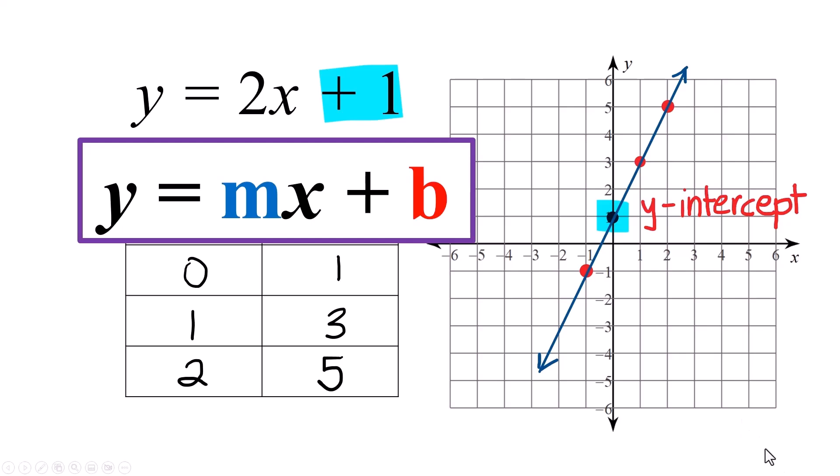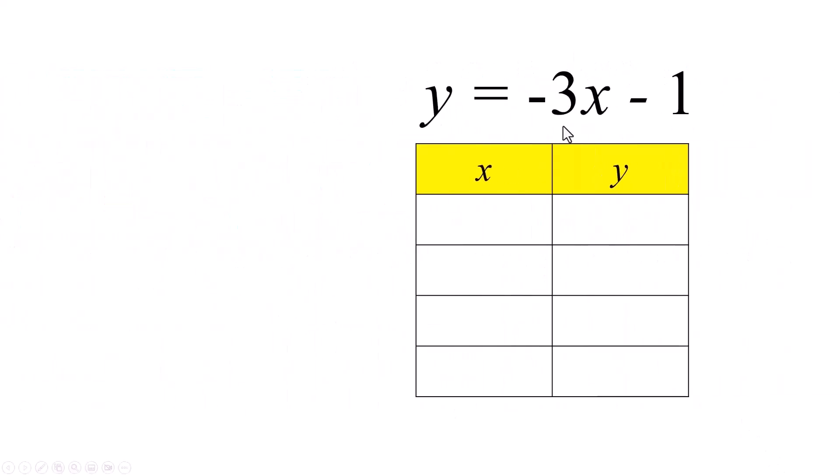Is that going to work all the time? Of course it will, but let me prove it to you. Here's a new equation. y equals negative 3x minus 1. I'm going to use the same x's because why not? Negative 1 times negative 3 is a positive 3. Positive 3 minus 1 is 2.